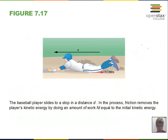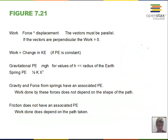In summary: work is calculated with parallel vectors of force and displacement; if they're perpendicular, work is zero. Work tells us how much kinetic energy changed — kinetic energy is one-half mv squared. Gravitational potential energy is mgh. Spring potential energy is one-half kx squared, where k is the force constant and the spring force is minus kx. Gravity and spring forces are conservative and have associated potential energies. Friction is a non-conservative force — energy is lost and there is no associated potential energy for friction.